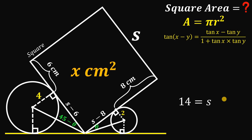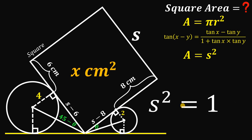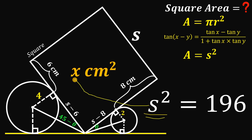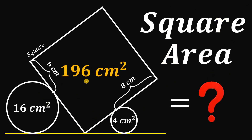Since s = 14 is only the side length of the square, the area equals s² = 14² = 196. Therefore, x = 196, and the area of the square is 196 square centimeters.